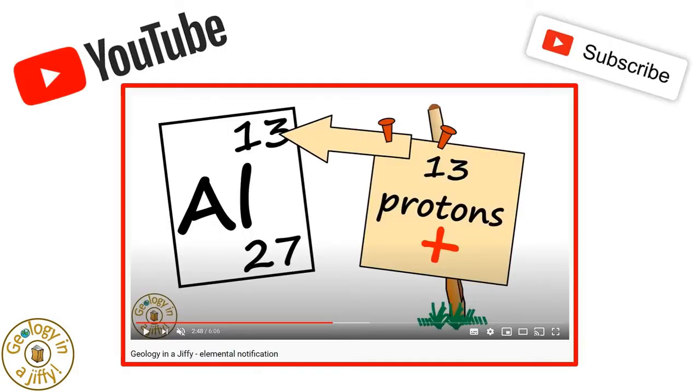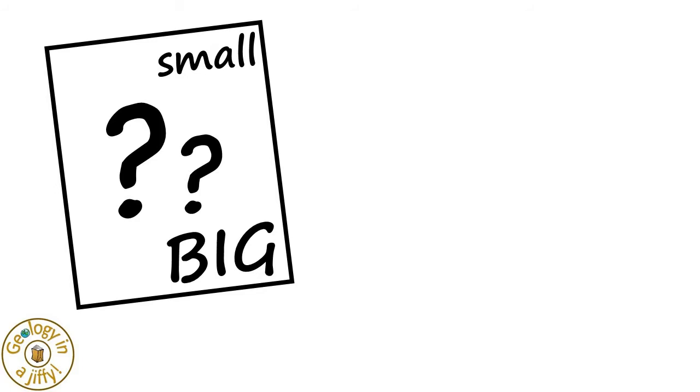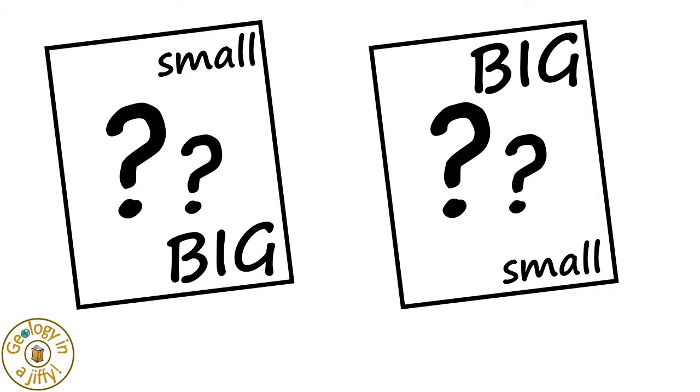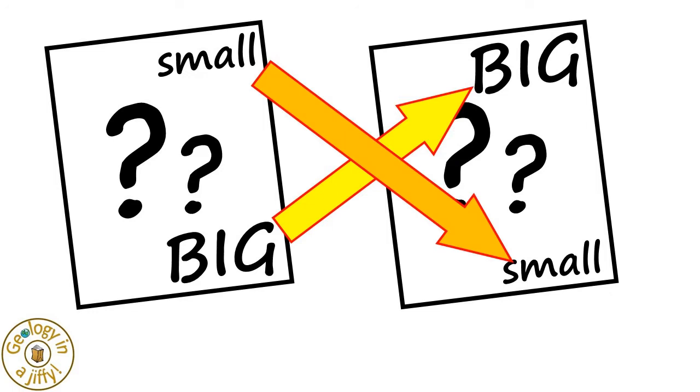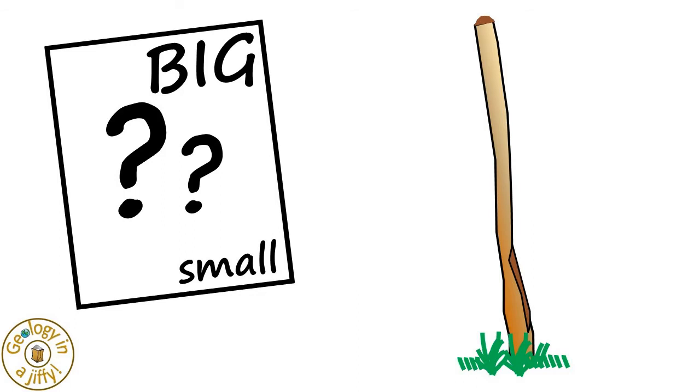Please do watch our video about elemental notification to know more about atomic structure. From that video we know that elements have symbols of letters and a small and big number. These small and big numbers can sometimes be written this way at the top and bottom and can be swapped to be bottom and top. They still mean the same thing wherever they are written. Let's use this way to show them.